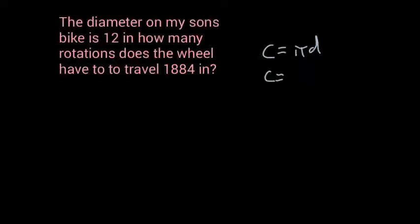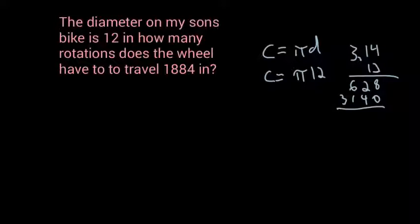So circumference equals pi times 12 in this case. So we're going to do 3.14 times 12. So work this out. 2 times 4 is 8. 2 times 1 is 2. 2 times 3 is 6. Zero placeholder. And then 1 times everything is itself. So I get 8, 6, 7, 3. 2 decimal points in my problem. So 2 in my answer. So one rotation it goes 37.68 inches.